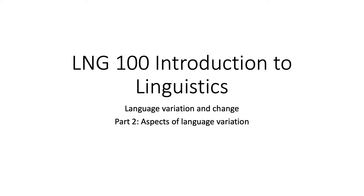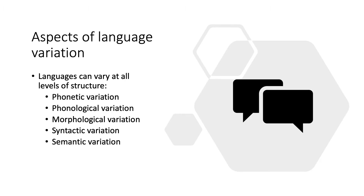Hello! In this second part of the lecture I will tell you about the different aspects of language variation. As you know, all languages have complex internal structure that consists of many different layers — the sound layer, the word layer, the sentence layer — many different modules compose language. And change and variation can affect every level of language.